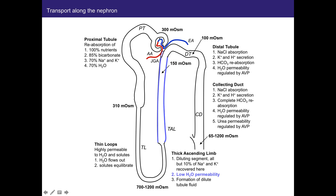Remember tubuloglomerular feedback: the macula densa cells can sense the flow rate through this area and send a signal to the afferent arterioles. If the flow is too great or too low, the afferent arterioles are going to constrict.